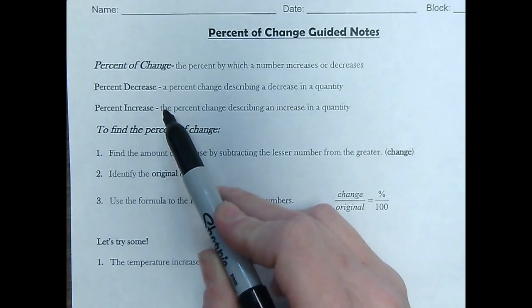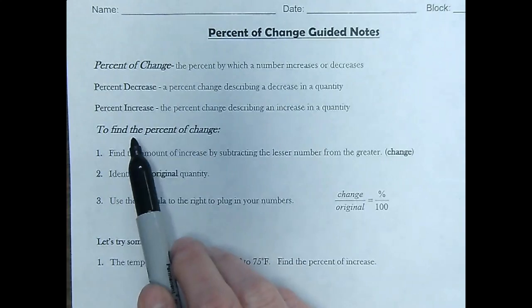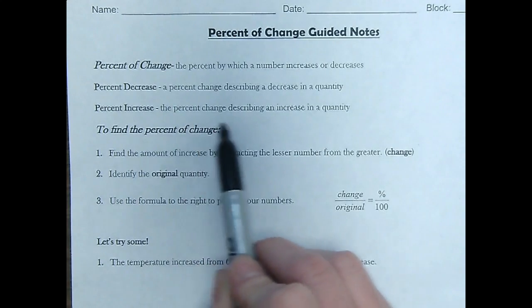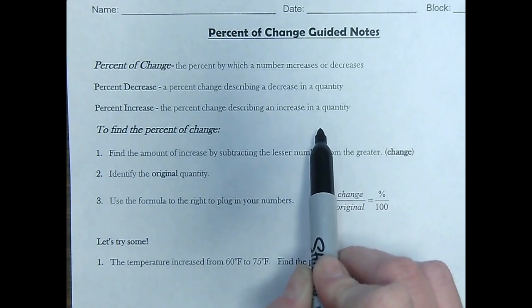When you have a percent decrease, it's because your numbers are going down. When you have a percent increase, your numbers are going up. The quantity is increasing.